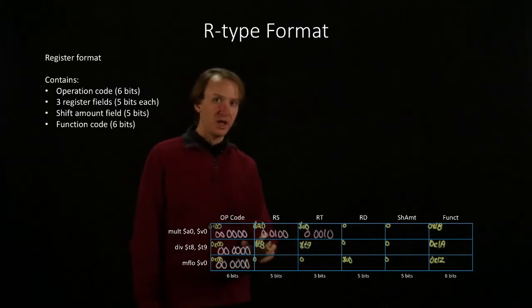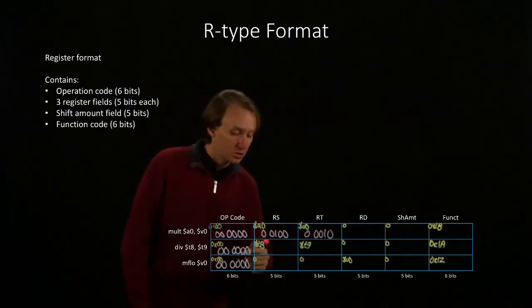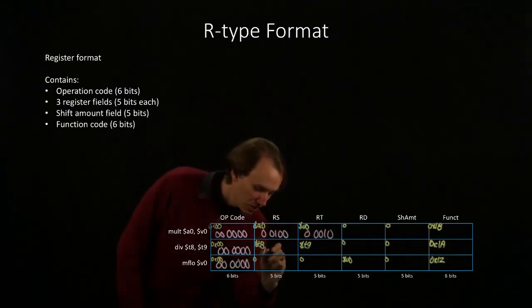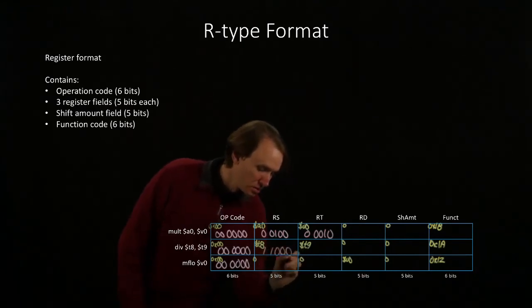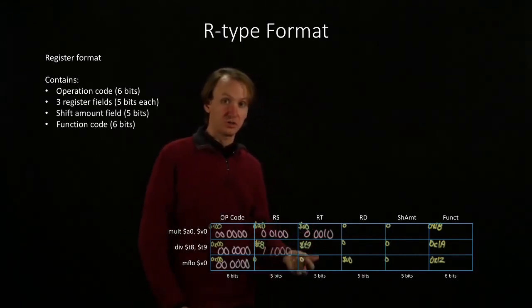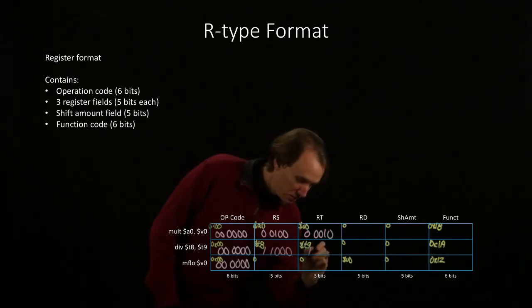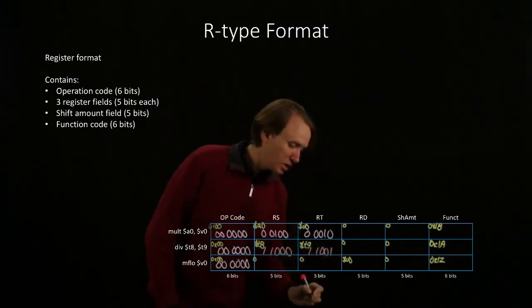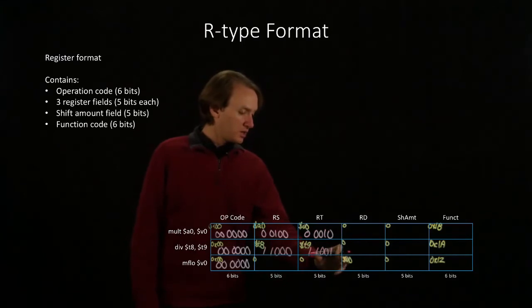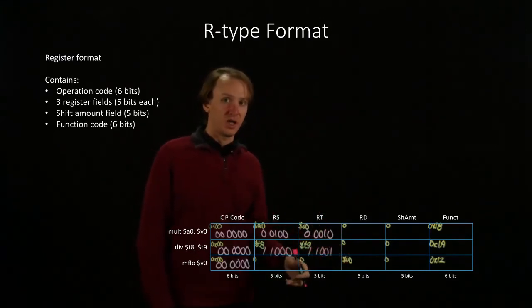T8 is register number 24, so that's 16 plus 8. Then T9 is register 25, which is 16 plus 8 plus 1. And then v0 is register 2 again.